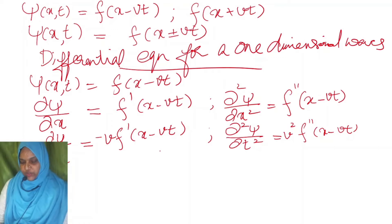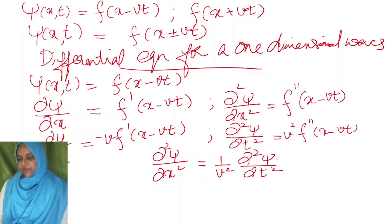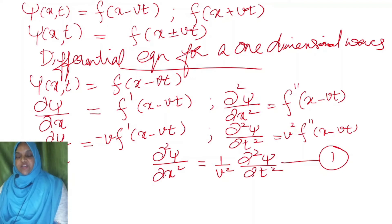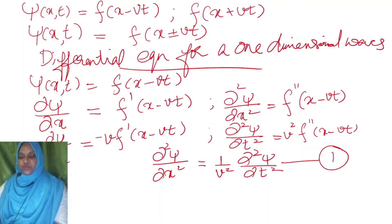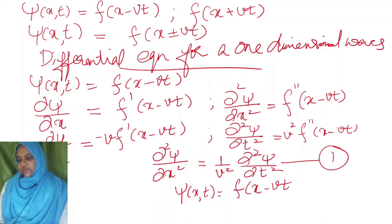Now we can equate these two equations. We have ∂²ψ/∂x² = f″(x − vt), and ∂²ψ/∂t² = v² · f″(x − vt). Therefore: ∂²ψ/∂x² = (1/v²) · ∂²ψ/∂t². This is the one-dimensional wave equation. It is a second-order differential equation, and its solution is ψ(x, t) = f(x − vt) or f(x + vt), for a wave traveling along the positive or negative x direction respectively.